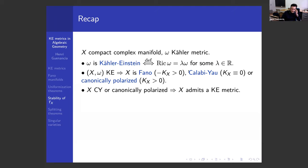The main theorem we talked about yesterday was the Yau theorem, and the Aubin-Yau theorem in the negative case, which says that if X belongs to one of the last two categories of manifolds, then X admits a Kähler-Einstein metric.